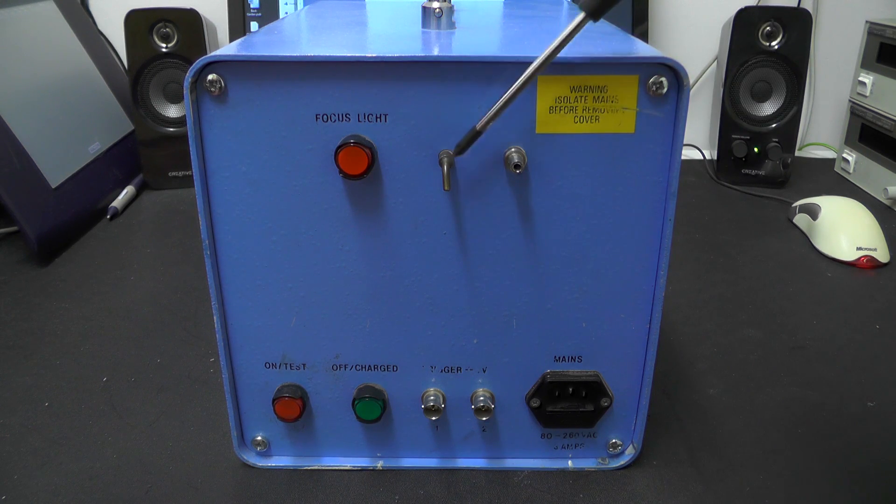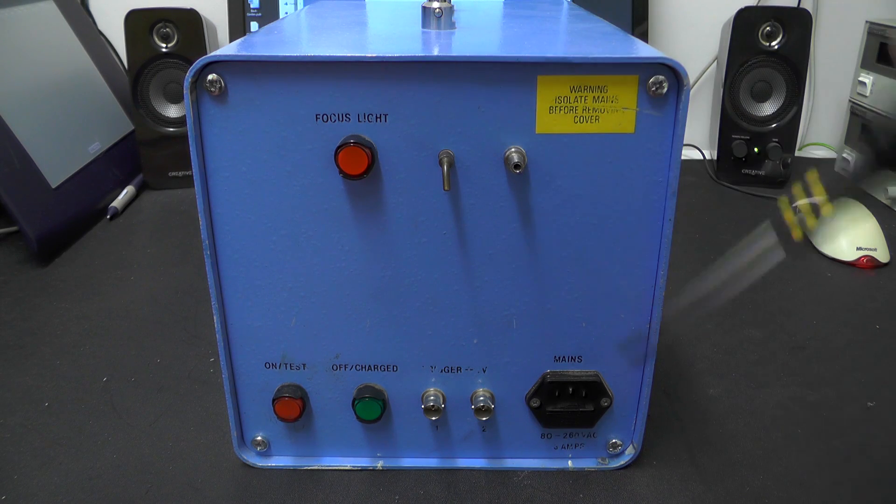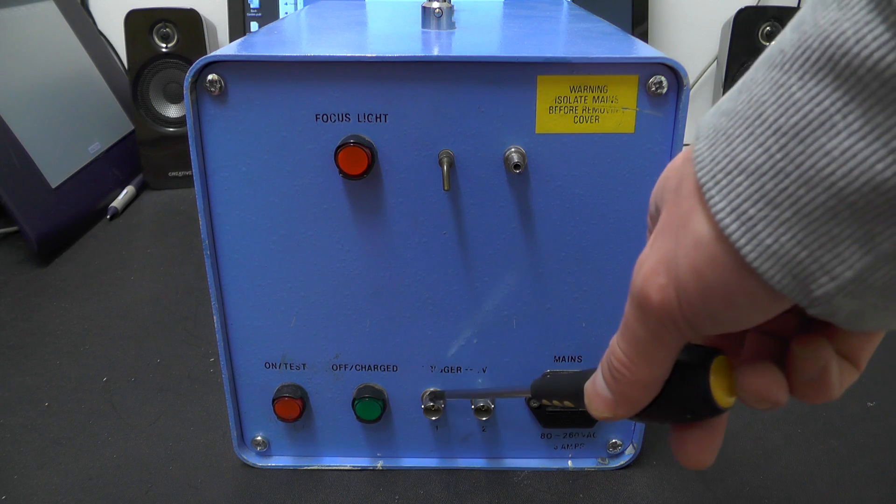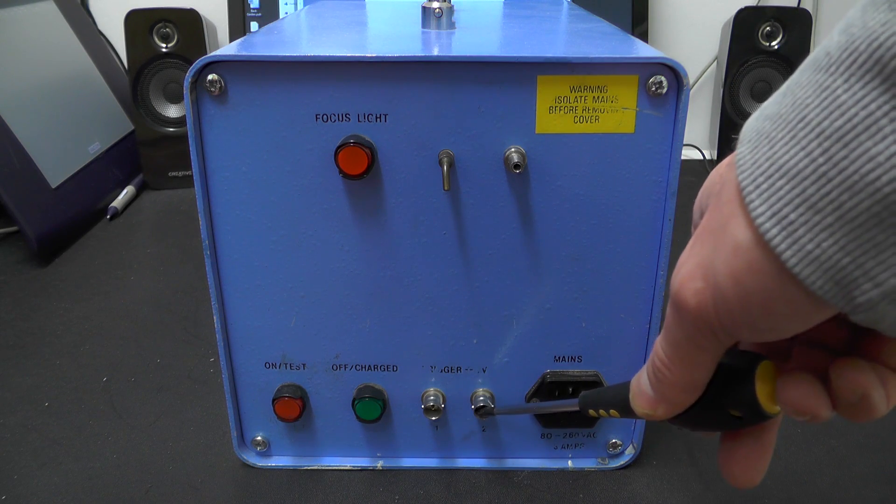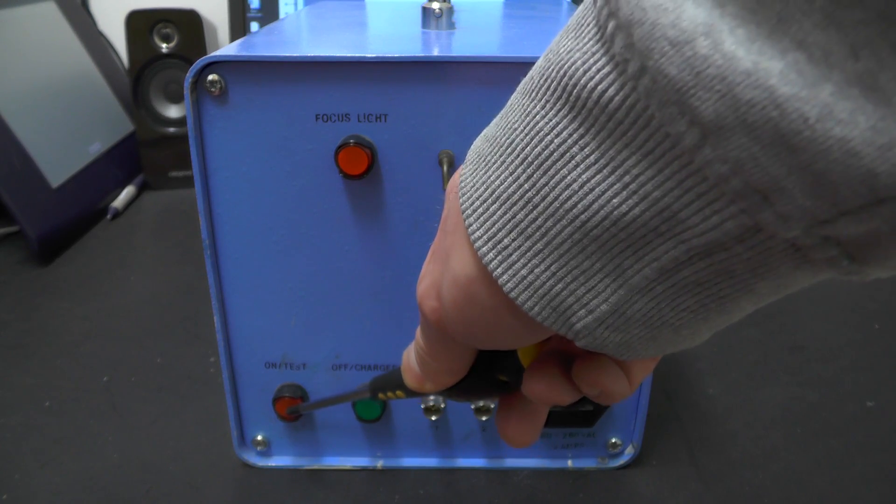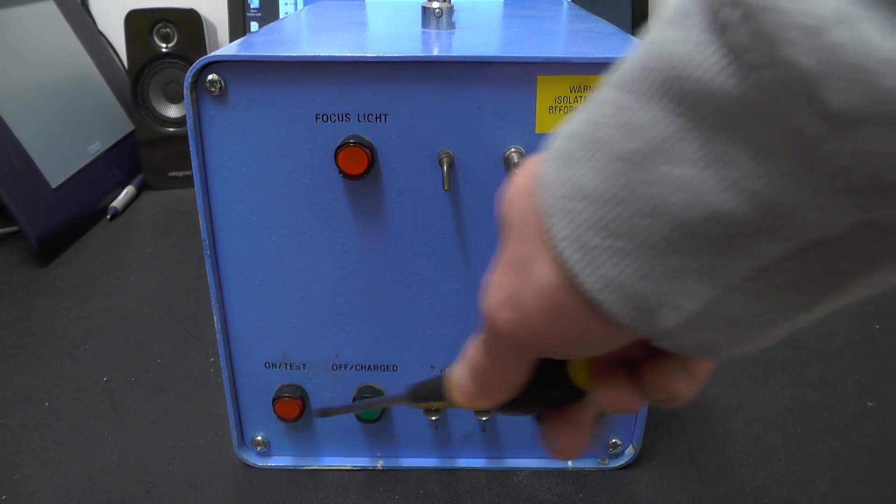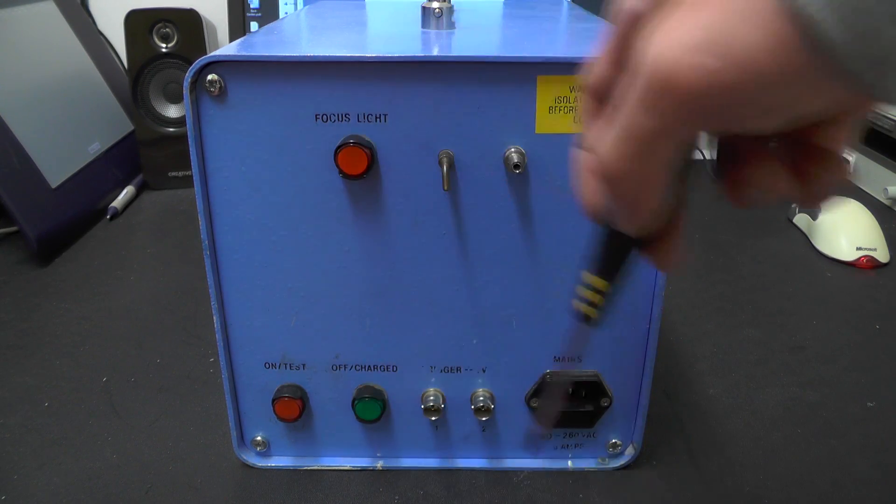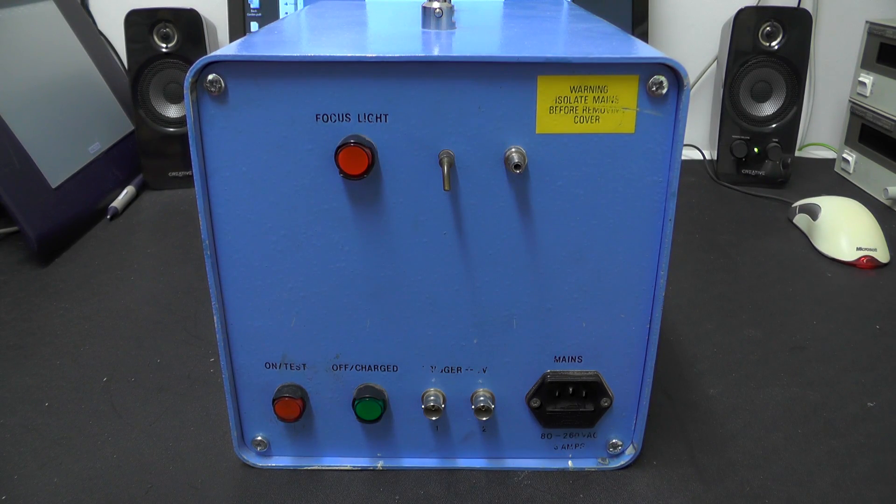On the back here you've got a few controls, we've got a focus light switch, so this turns on an internal halogen light which projects out the front. Which allows you to focus the lens mechanism. There's two gas ports here, I'll go into those a little bit more when we get inside it. We've got mains input, we've got two trigger inputs, and we've got on and test and off and charge. Now these have lights in, so these do indicate things to the end user.